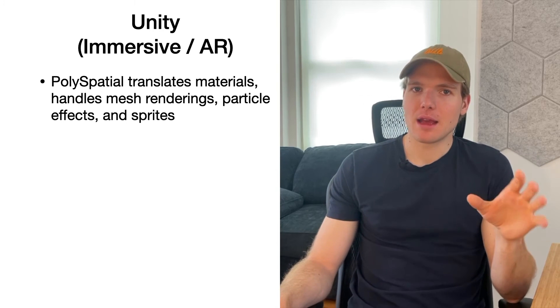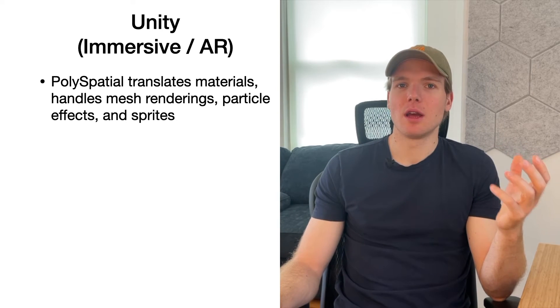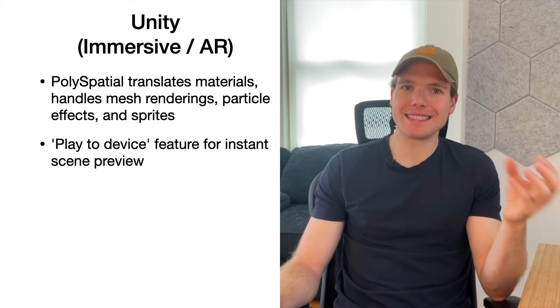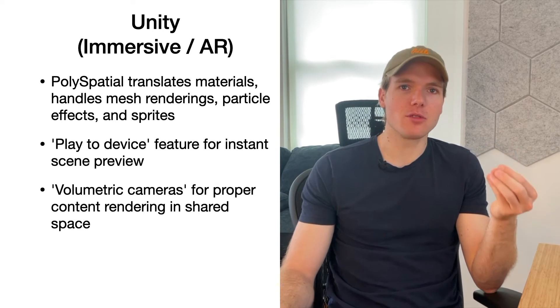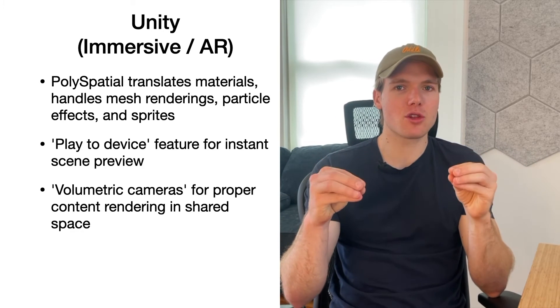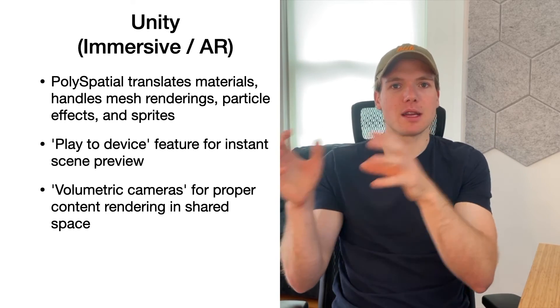However, bear in mind that handwritten shaders aren't supported for RealityKit. With Polyspatial, Unity also introduces a feature called Play to Device which lets you instantly preview your scene when working in Unity. There's also a new concept called Volumetric Cameras which are essential to creating content for the shared space, ensuring that content is rendered properly in the volume amongst other apps. User interactions on Vision Pro involve the use of eyes, hands, and tap gestures, which you can receive in your Unity project by configuring proper input colliders.